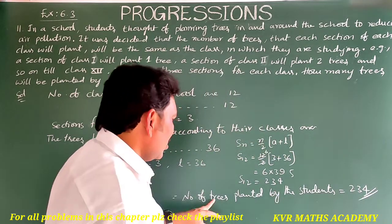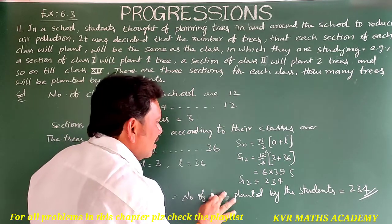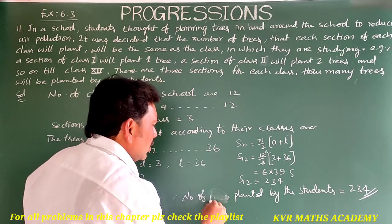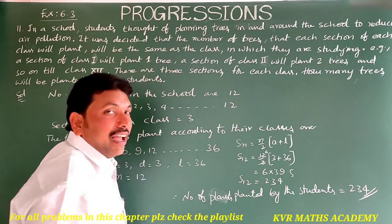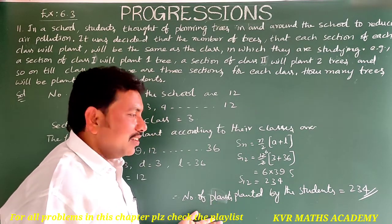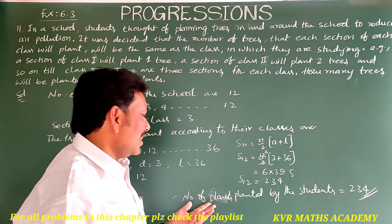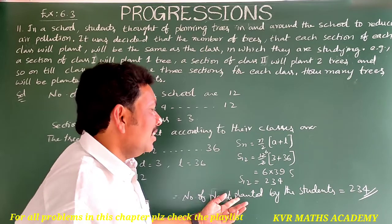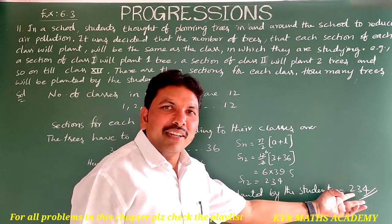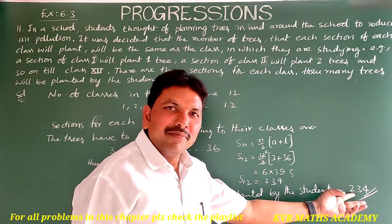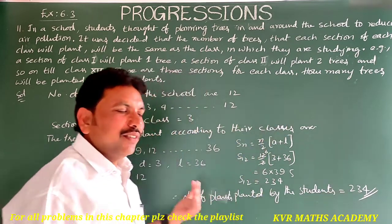Have you understood? Actually here we should write plants, not trees, because trees we can't plant directly. So number of plants planted by the students is equal to 234. Have you understood clearly? Note it down.